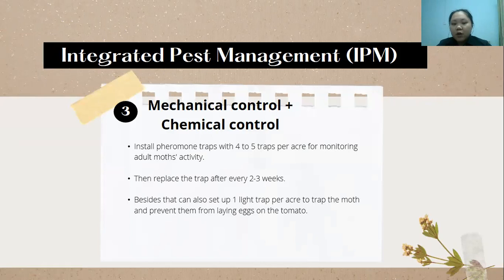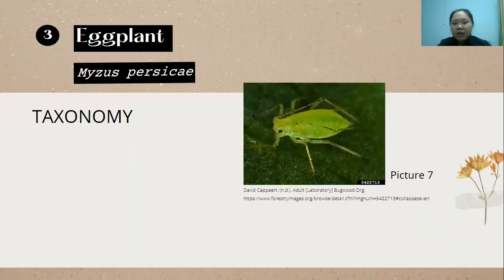The last method is mechanical and chemical control. We can install pheromone traps at four to five traps per hectare to monitor adult moth activities. We must replace the traps every two to three weeks to maintain their efficiency. We can also set up one trap per hectare to trap the moths and prevent them from laying eggs on the tomato.